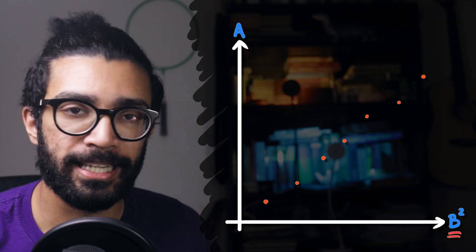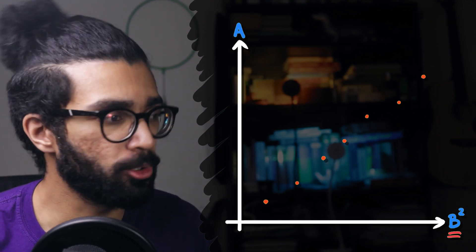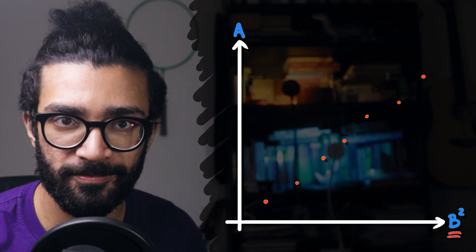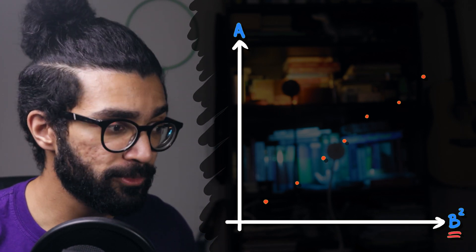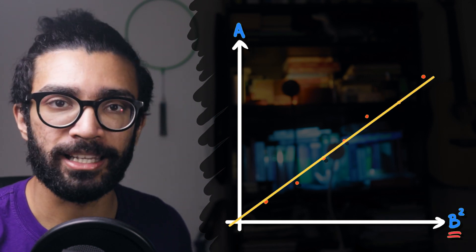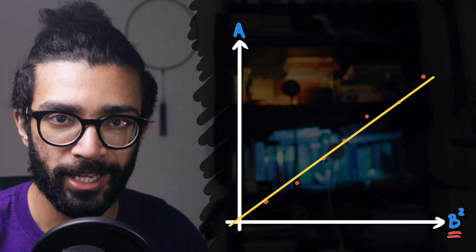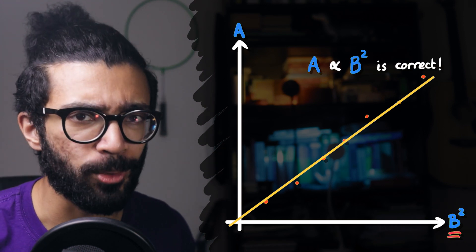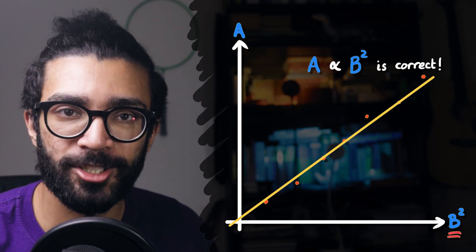What about if we try to plot A against B squared, for example, or A against B cubed, depending on, again, what the theory tells us? This works slightly better, because if the theory tells us A is proportional to B squared, and we can plot a straight line when we've plotted A against B squared, then this sort of tells us that the relationship we're looking for is the correct one.